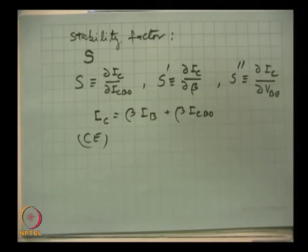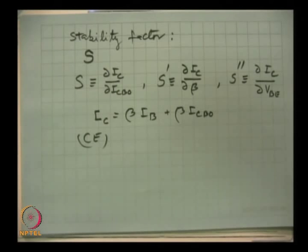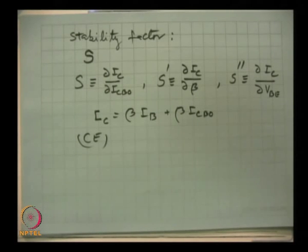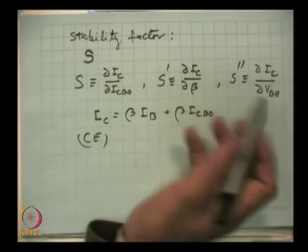The cause of variation is immaterial. If we have designed the biasing circuit to account for variation of any one of these three parameters — S, S′, or S″ — then the circuit will remain stable. Stable means the Q point will not shift significantly whether due to temperature change, aging, or device replacement.